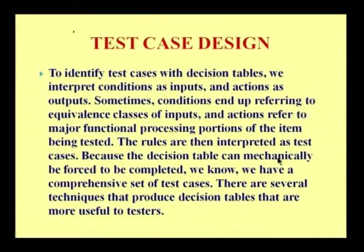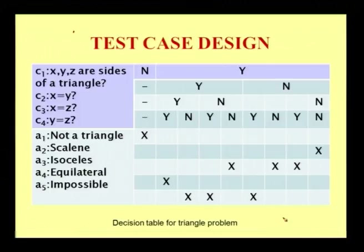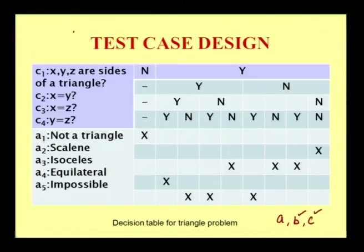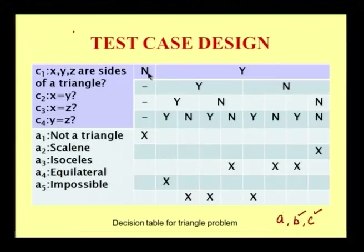There are several techniques that produce decision tables most useful to testers. As an example, the common decision considered in the previous session was on plotting a triangle. Given three different values A, B, and C, I wanted you to check whether A, B, and C will form a triangle. For this, let me take the same confusion matrix where the conditions are mentioned as X, Y, Z instead of A, B, and C as the sides of a triangle. I might get an answer of yes or no type instead of true and false. If the answer is no, the action says it is not a triangle at all.